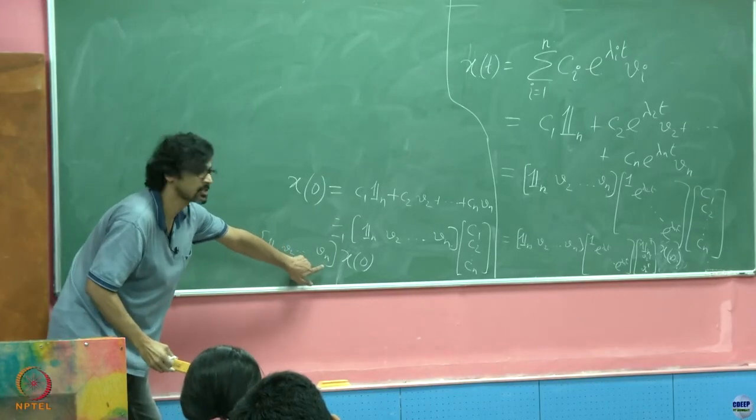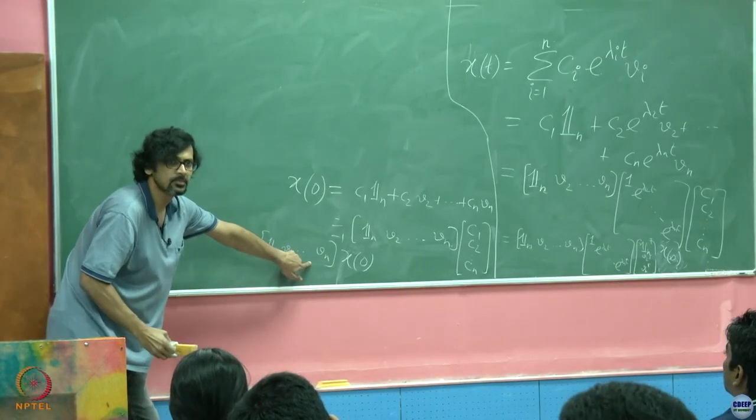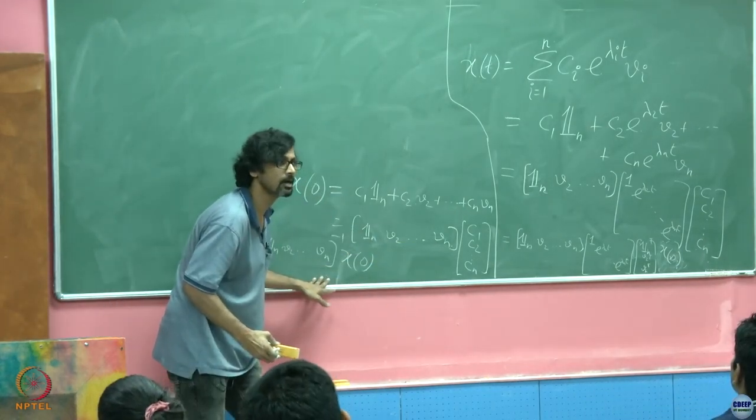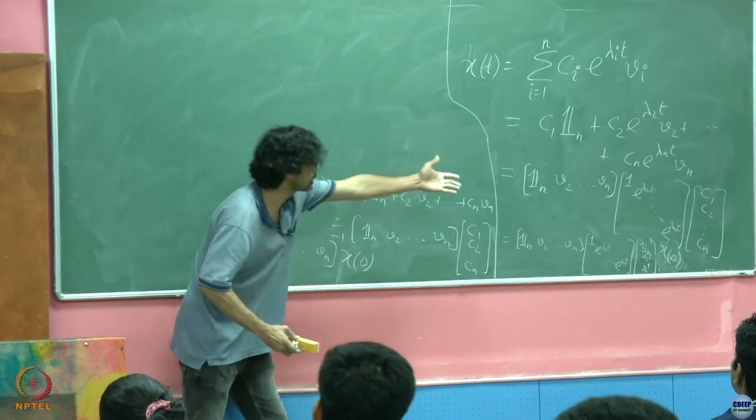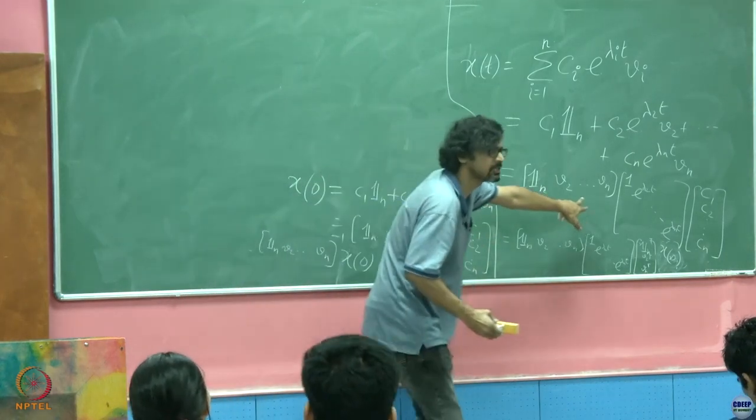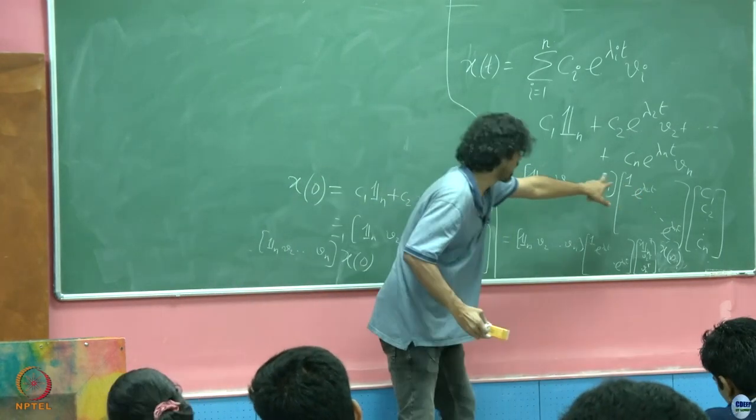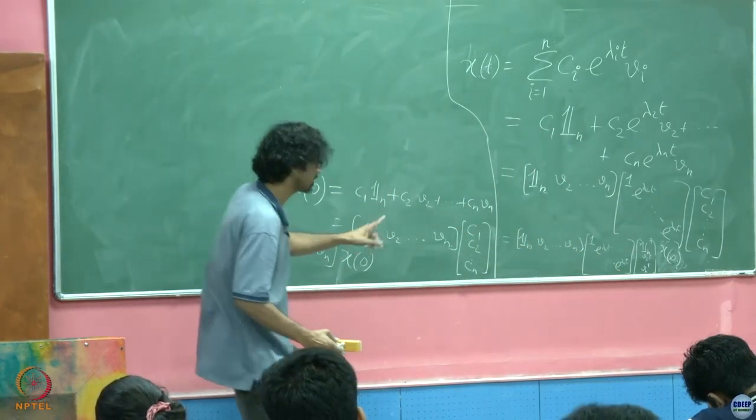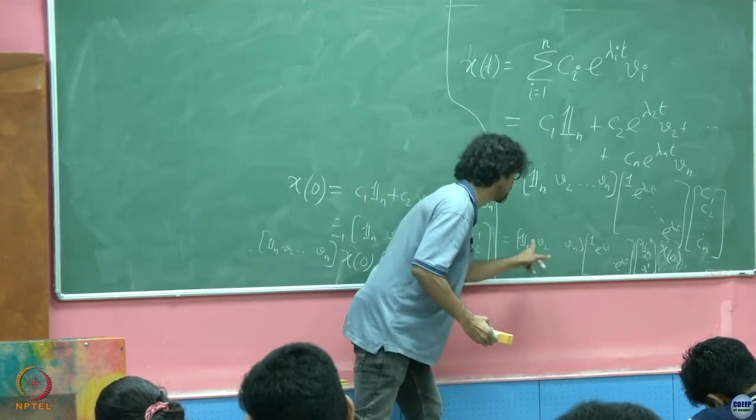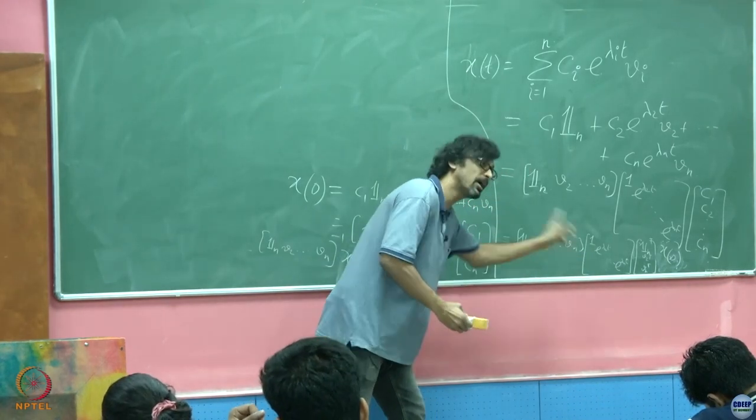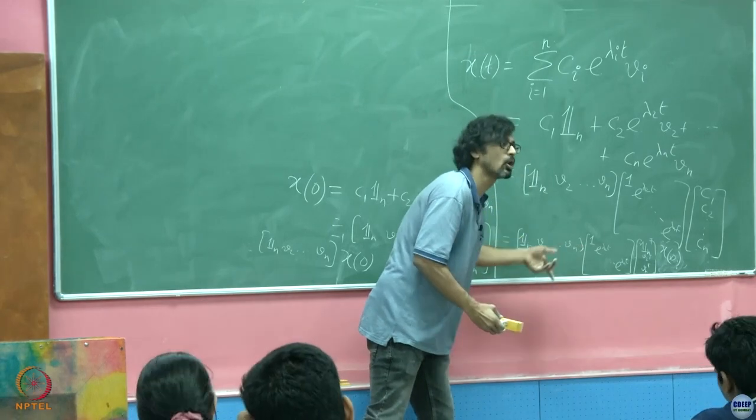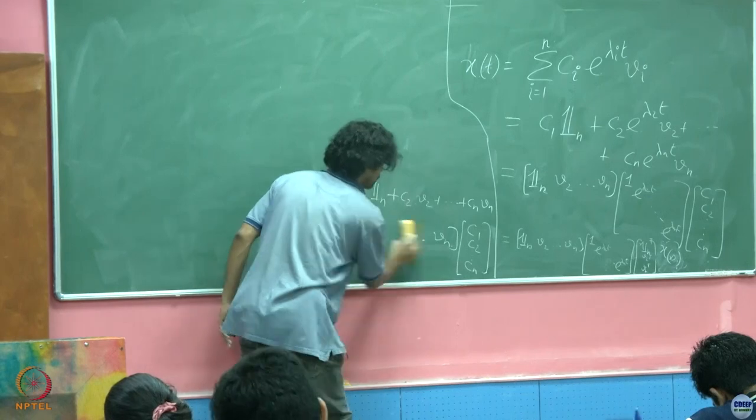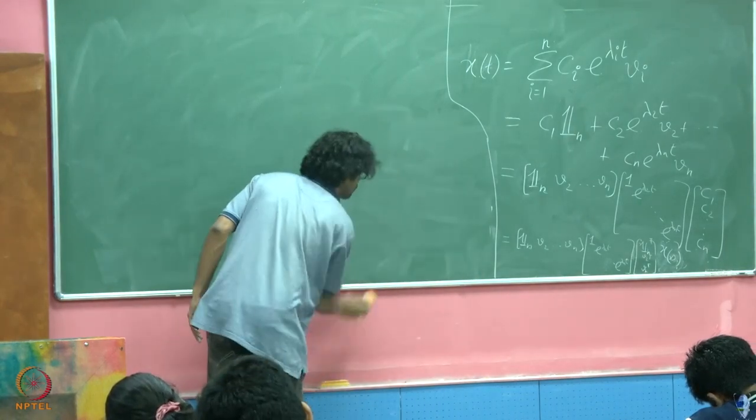I might as well replace this here with [all ones, V_2, until V_n] and then this with [1, e^{lambda_2 t}, ..., e^{lambda_n t}] and then the c_1 I am going to replace. So what do you know about this matrix? This is a matrix of the eigenvectors of the Laplacian, is it not. So it is an orthogonal matrix. What do you know about its inverse? It is just the transpose of this fellow.